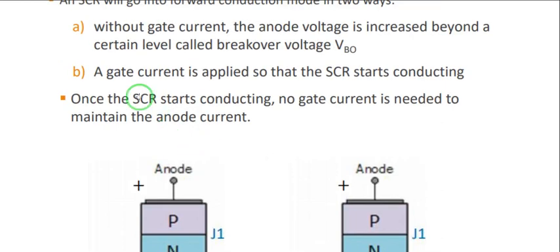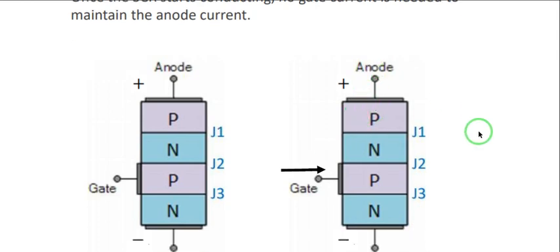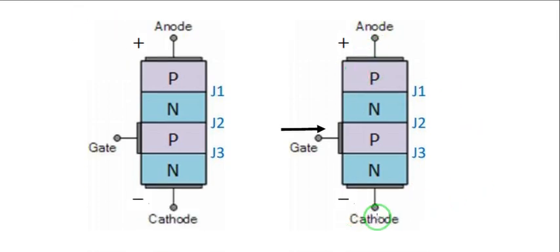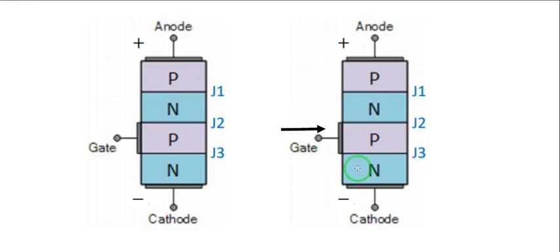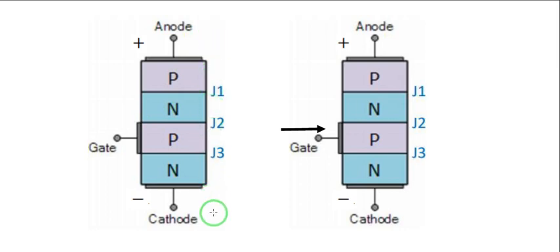The second way — which is the main topic to be discussed more on SCR — is when gate current is applied. When the anode and cathode terminals are forward biased and a certain gate current is applied to the gate terminal, the SCR will conduct, allowing current to flow from anode to cathode. The gate current will be very small compared to that anode-to-cathode current.